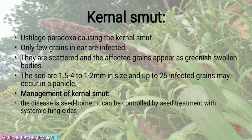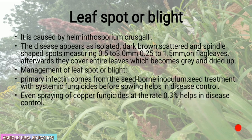Kernel smut is caused by Ustilago paradoxa. Only a few grains in the ear are infected; they are scattered, and the affected grains appear as greenish swollen bodies. The sori are 1.5 to 4 × 1.2 mm in size and up to 25 infected grains may occur in a panicle. Management: the disease is seed-borne and can be controlled by seed treatment with a systemic fungicide.